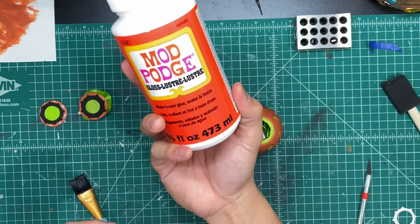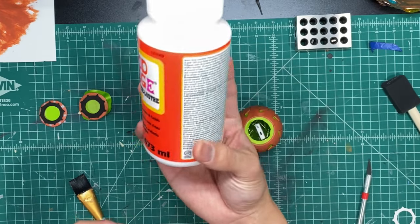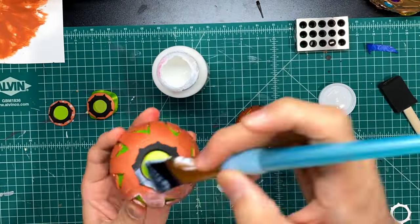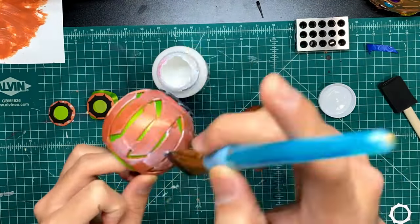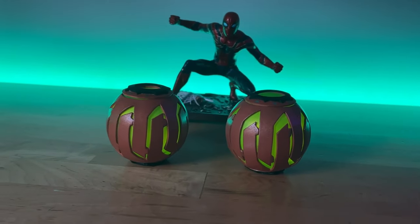Now the final step is to use this gloss mod podge. Basically we're just going to brush it onto the entire pumpkin bomb, and that should give it a nice shiny effect. This is what you should have when you're done.